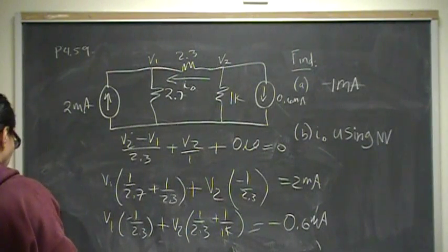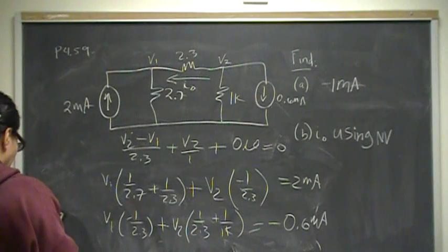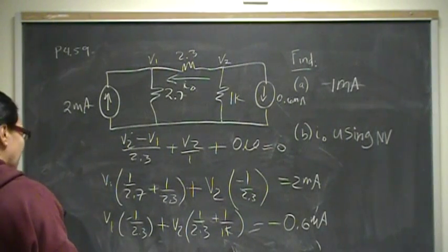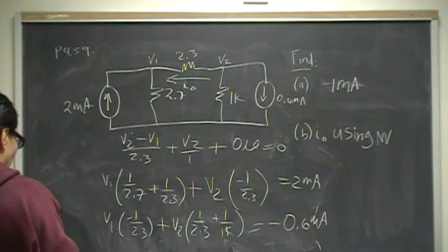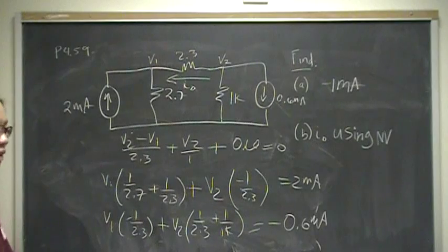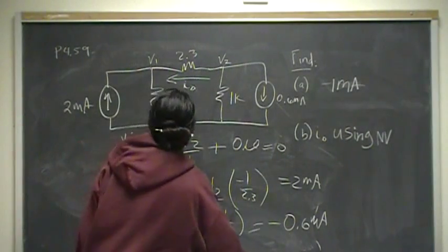So node voltage at V1 is minus 2 millis plus V1 over 2.7 plus V1 minus V2 over 2.3 equals 0. Okay, I agree with that. We've got V1, 1 over 2.7 plus 1 over 2.3, plus V2 negative 1 over 2.3, bringing this over to the other side equals 2 millis. At V2, we have V2 minus V1 over 2.3 plus V2 over 1k plus 0.6 equals 0. And these are exactly the same thing that I got, so it has to work out. Try again. It's got to be a typo somewhere in my matrix. So 1 divided by 2,700 plus 1 divided by 2,300, negative 1 divided by 2,300, 0.002. That's 2 milliamps. Negative 1 divided by 2,300 plus 1 divided by 1,000, negative 0.0006. F5.